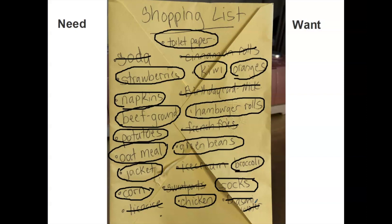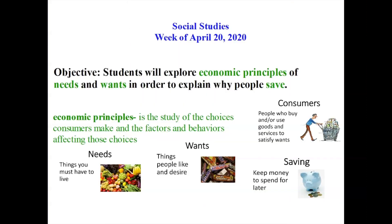Look at my list — there's a lot of things that I was able to cross out. When I buy the things that I need, if there's money left over, then I'll buy the things that I want. So what we did in social studies was we explored economic principles of needs and wants in order to explain why people save. Thank you for helping me remind myself of what needs and wants were. Thank you.